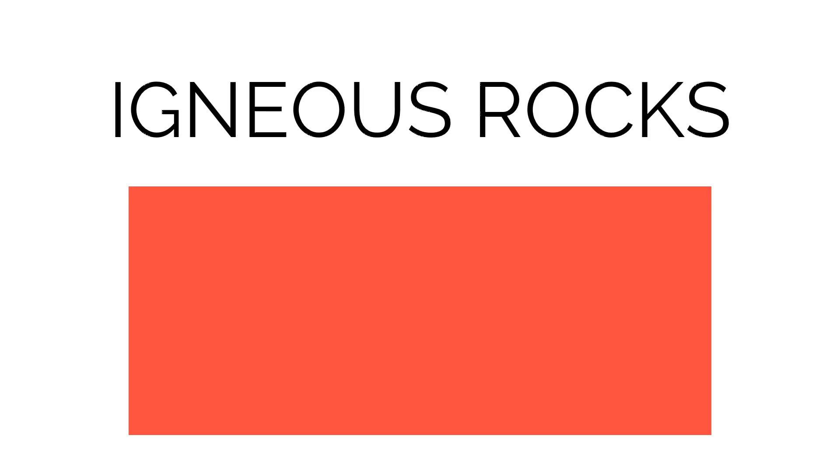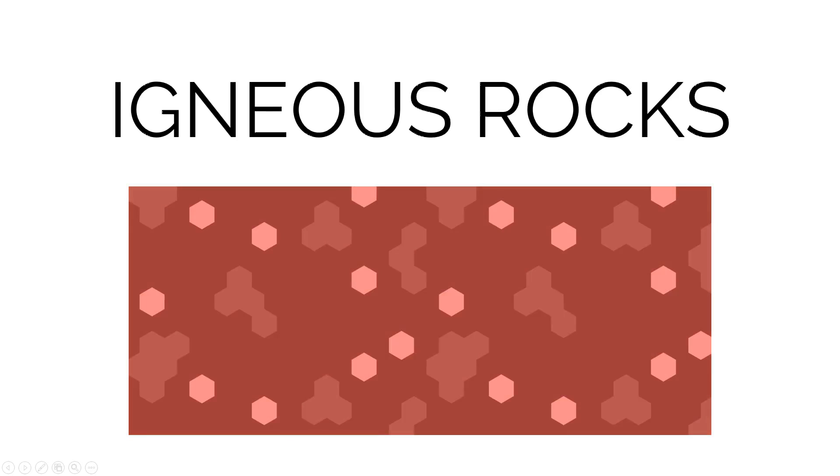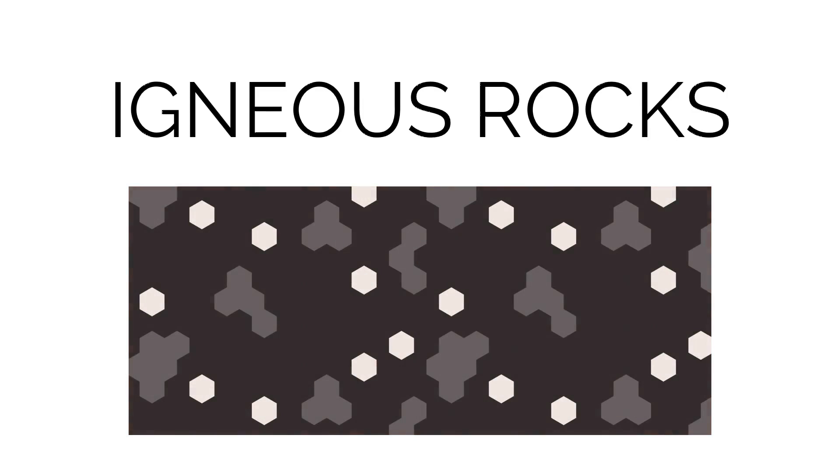First, what are igneous rocks? Any rock that was formed from molten rock, magma or lava, is an igneous rock.